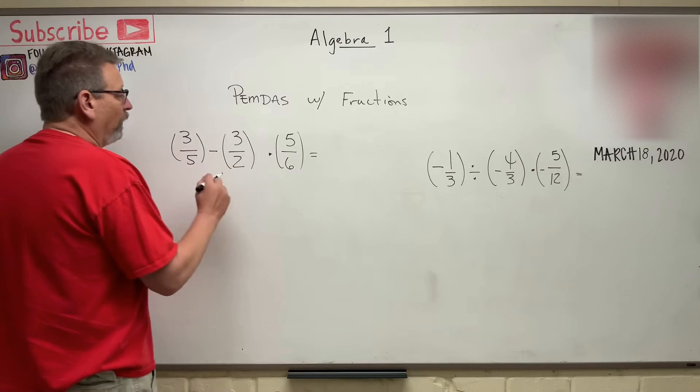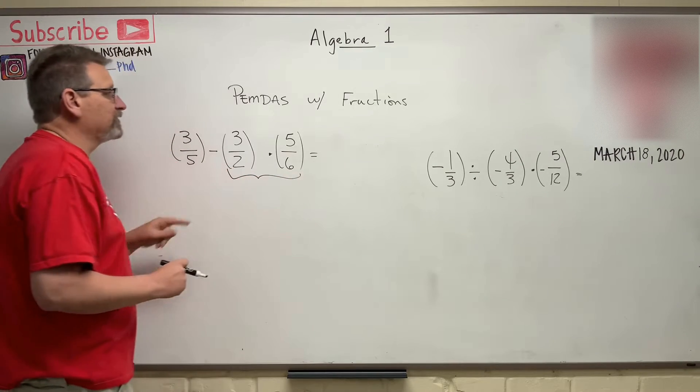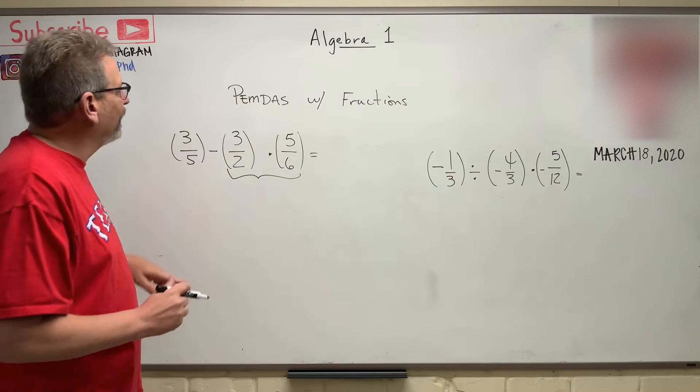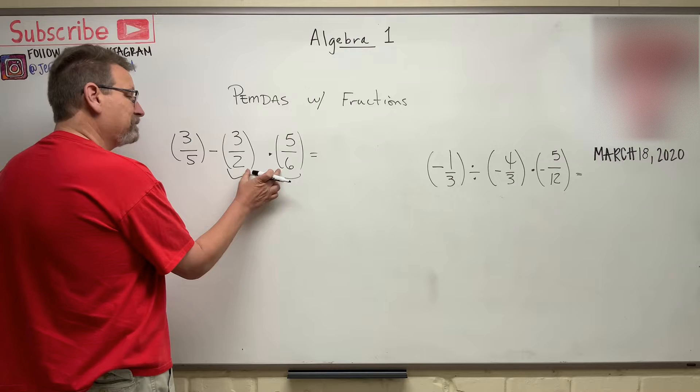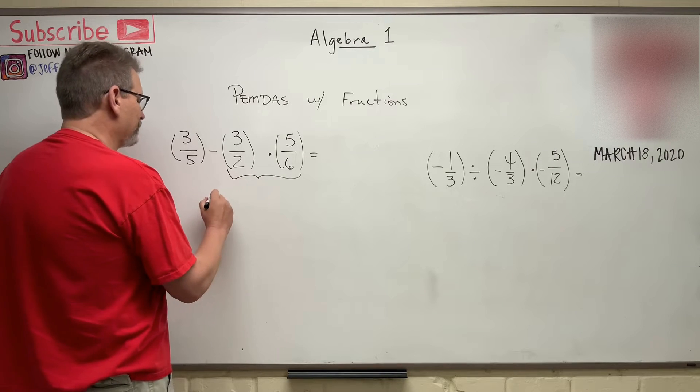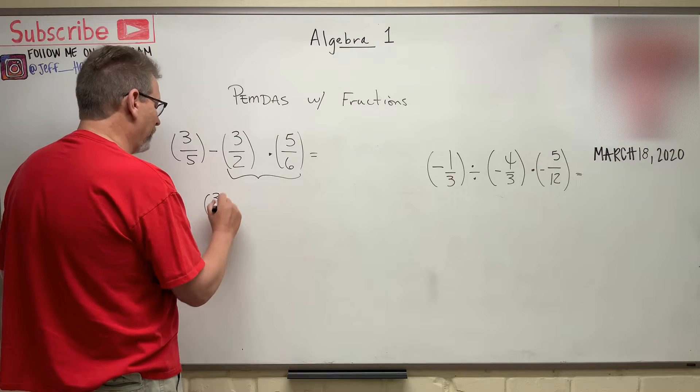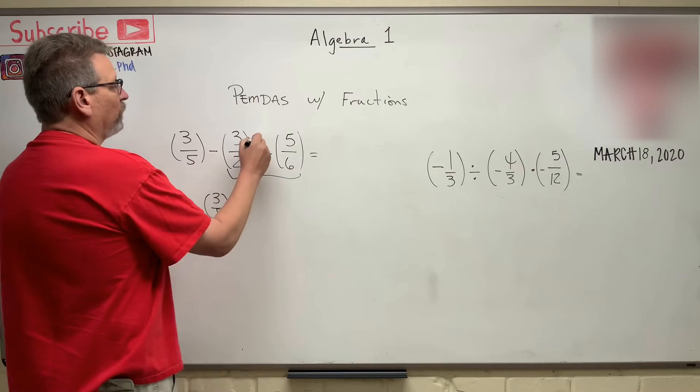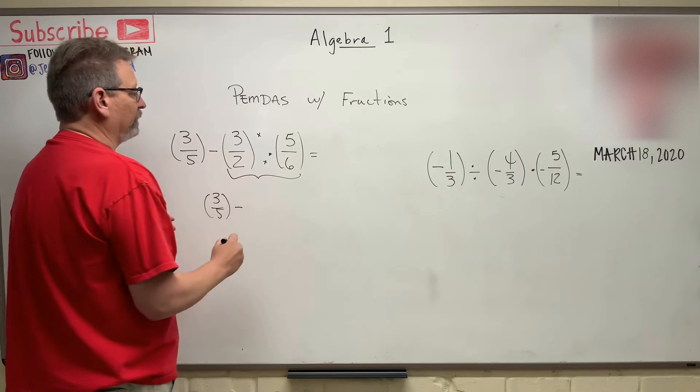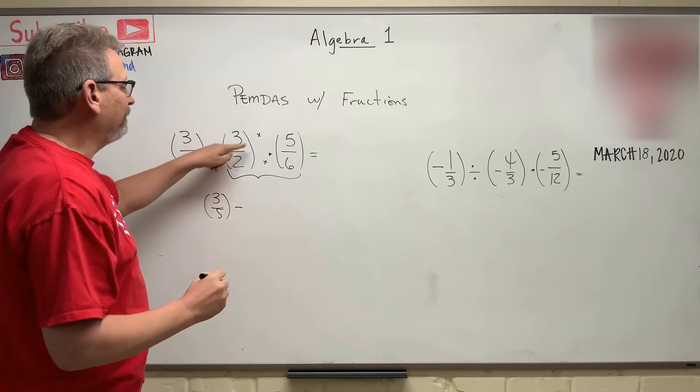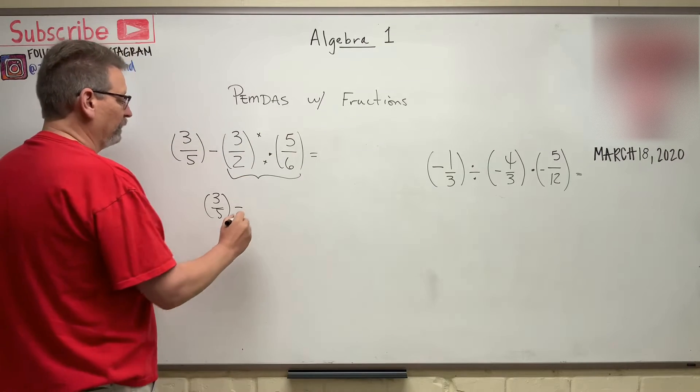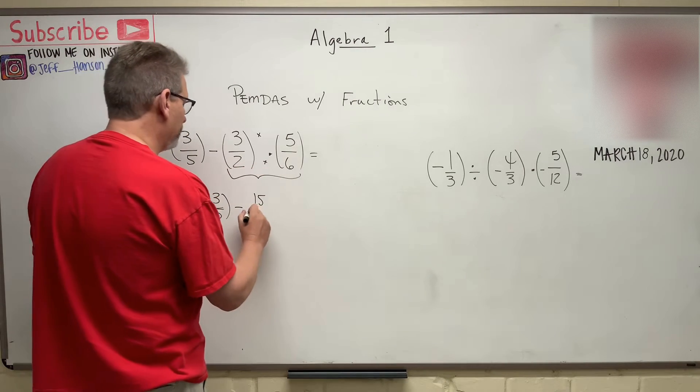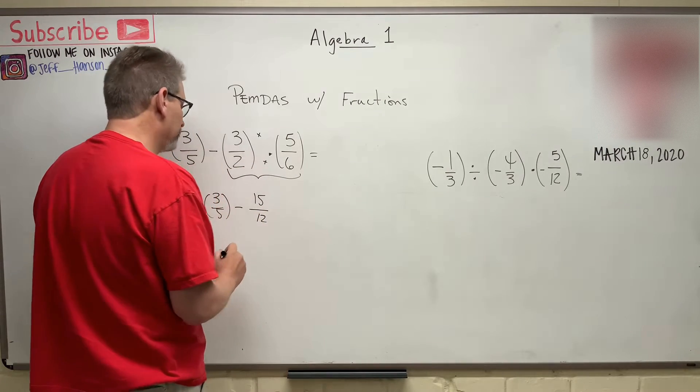Step one for this one is we're going to do this part here, which is multiply, which comes before add or subtract. So we're going to evaluate this portion only. 3/5, I'm not going to change that part, minus what does that turn into? Remember, we multiply the tops and the bottoms together. 3/2 times 5/6 turns into 3 times 5 is 15, and 2 times 6 is 12.